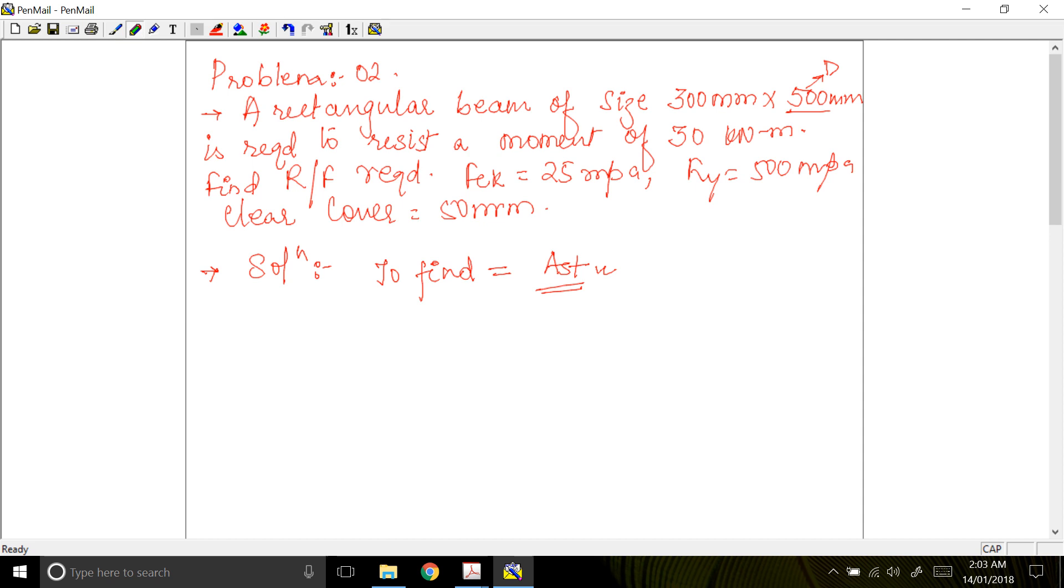Given data or input data: first data is the size of beam. Size, your width of beam is 300 mm. Depth, the overall depth they have given is 500 mm. We have also a clear cover of 50 mm, so clear cover is equal to 50 mm.